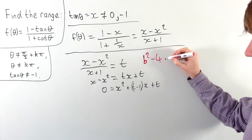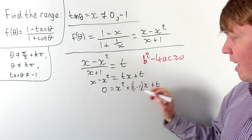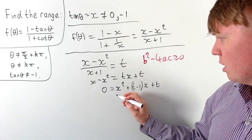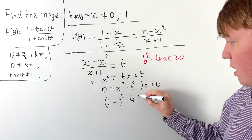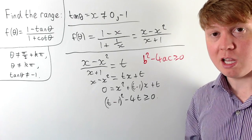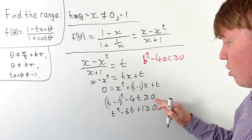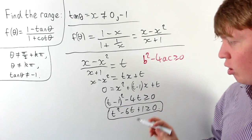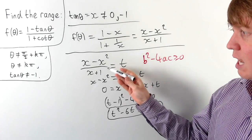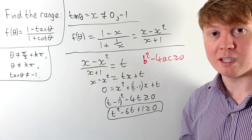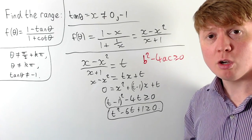We multiply both sides by (x + 1), giving t·x + t = x - x². Taking all terms to one side, we get x² + (t - 1)x + t = 0. Now we think about this in terms of the discriminant: we're looking for where there are values of x making this equal to t, which is exactly when b² - 4ac is non-negative. Here b = (t - 1), a = 1, and c = t. So the condition is (t - 1)² - 4t ≥ 0, which simplifies to t² - 6t + 1 ≥ 0. The values of t satisfying this are exactly those in the range of our function.